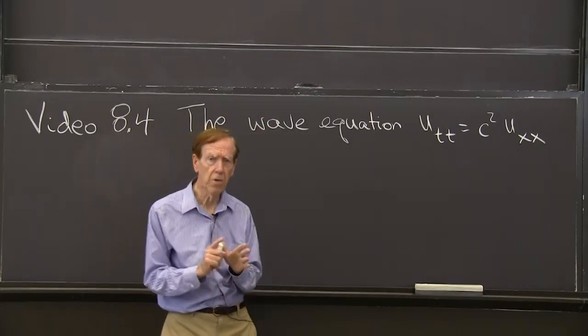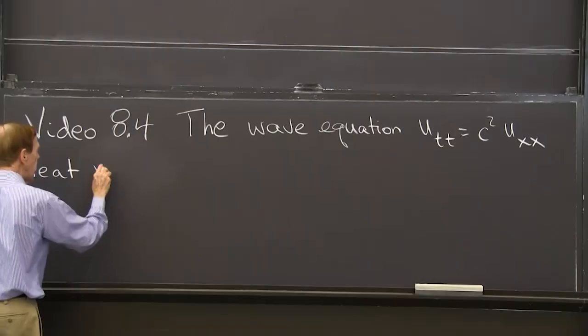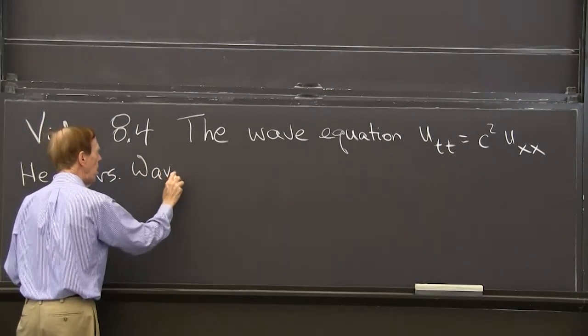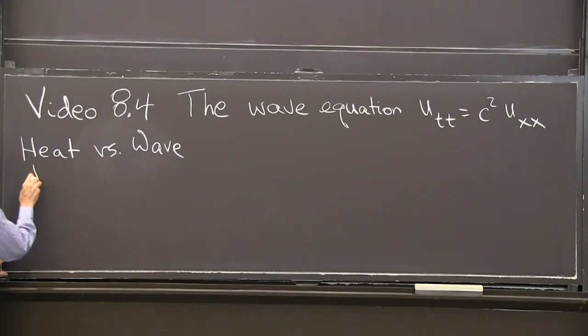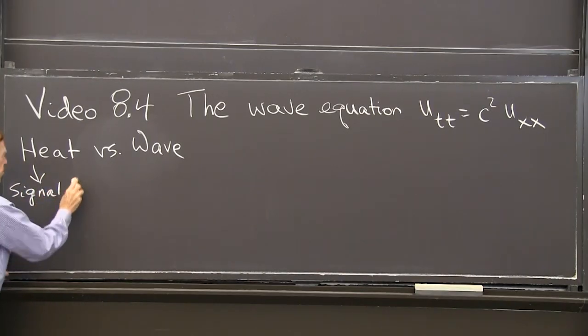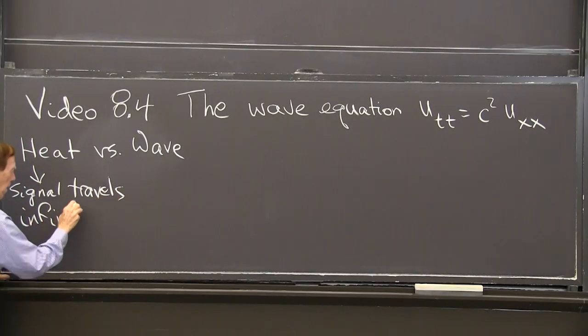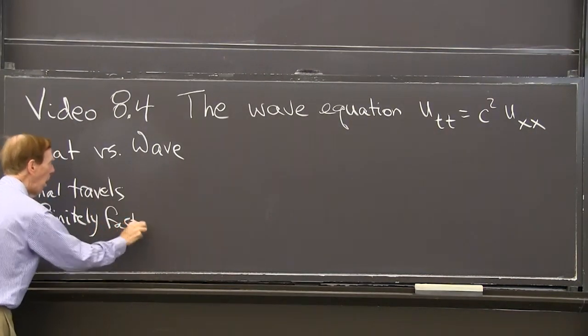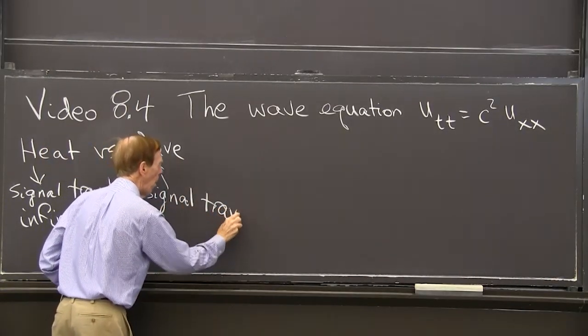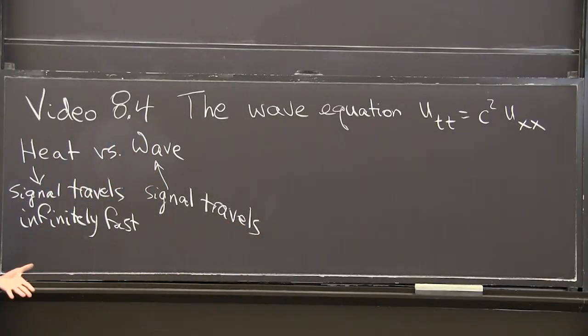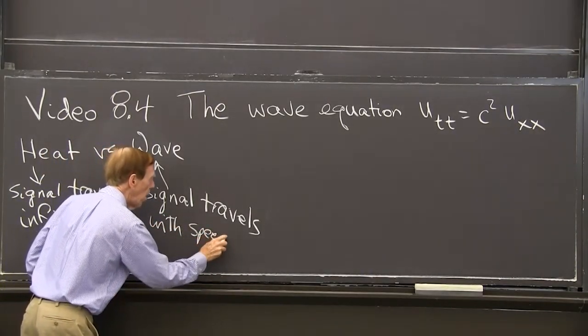So what are the differences between the heat equation and wave equation? Heat versus wave equations. What are the sort of biggest differences? For heat, the signal travels infinitely fast. And in the wave equation, the signal travels with finite velocity, with speed c.